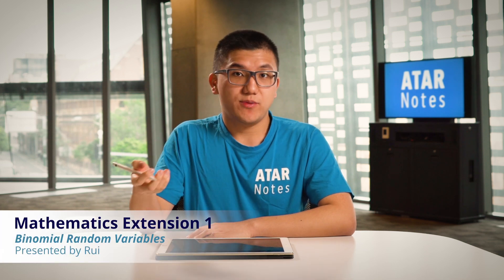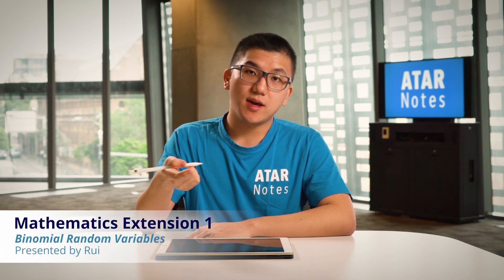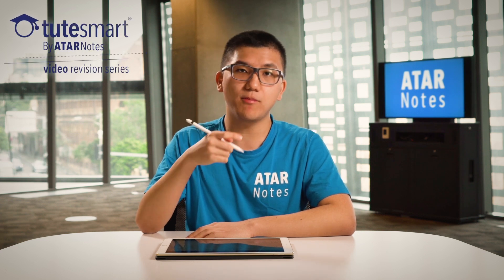Today I want to talk about the binomial distribution. A binomial random variable is a special case of a discrete random variable where we're trying to model a scenario in which we run a particular experiment over and over again n times, and that experiment is characterized by a success outcome with probability p. This is called a Bernoulli trial, and once we know n and p, we can do everything else.